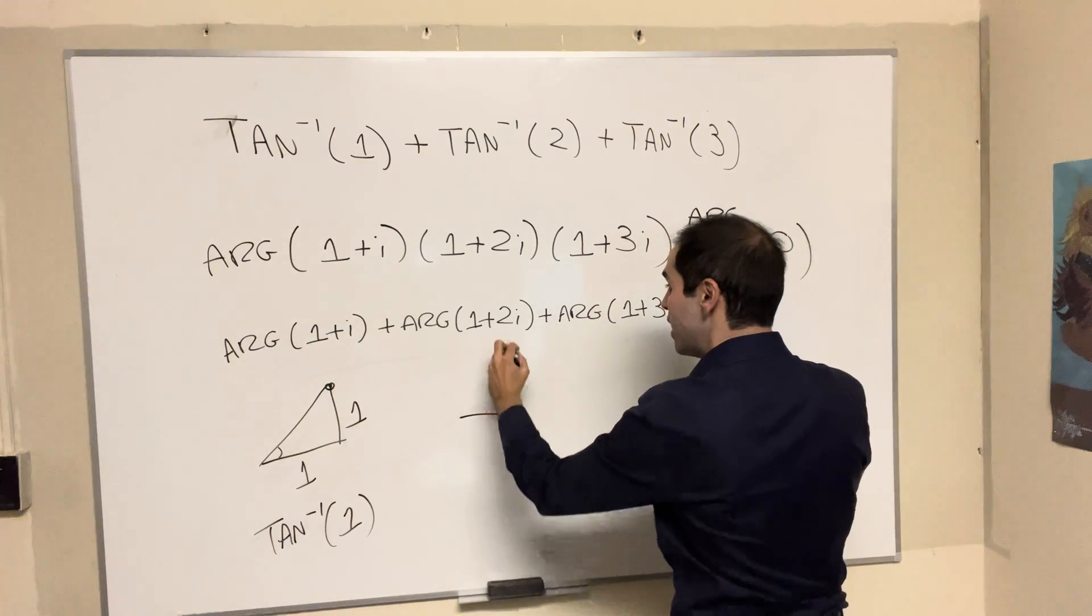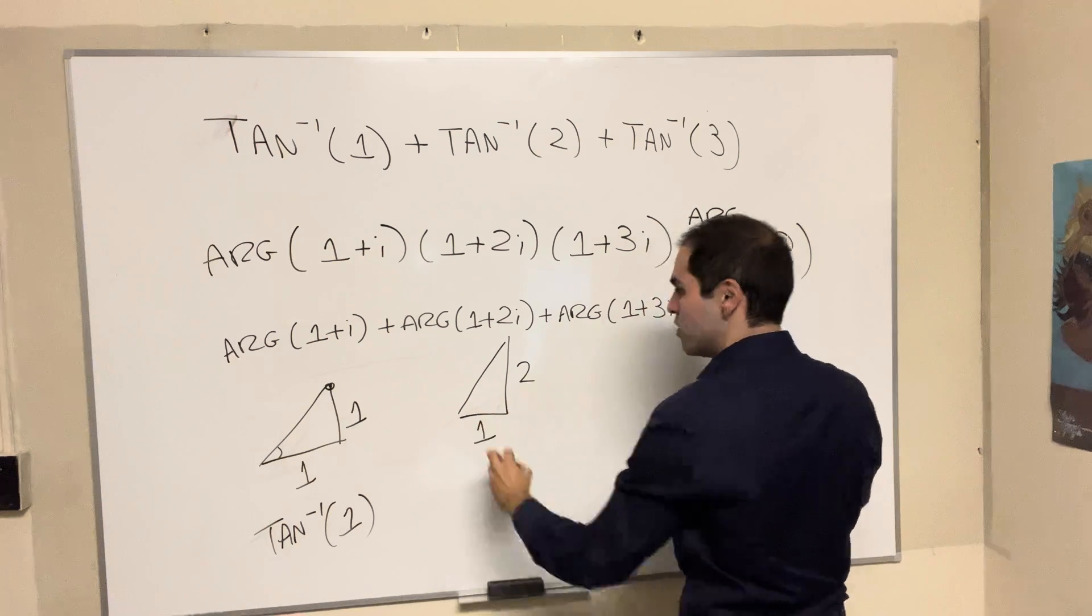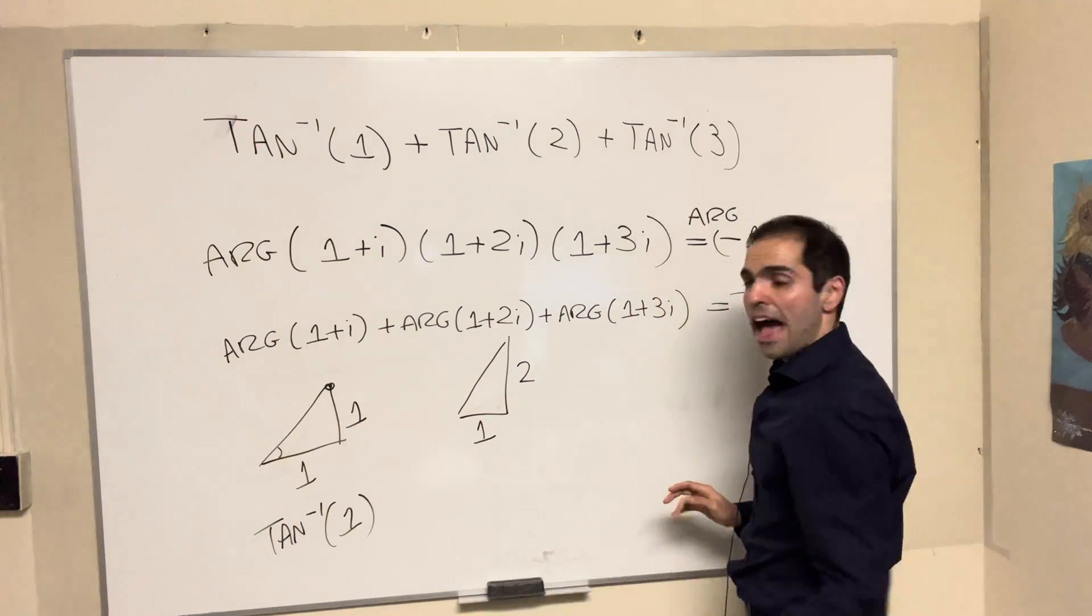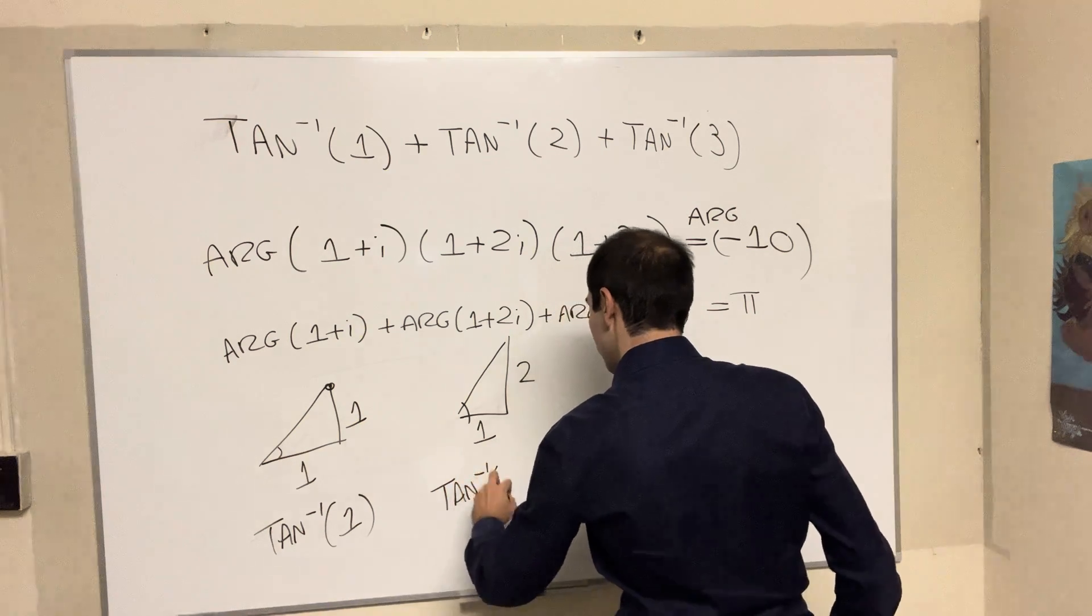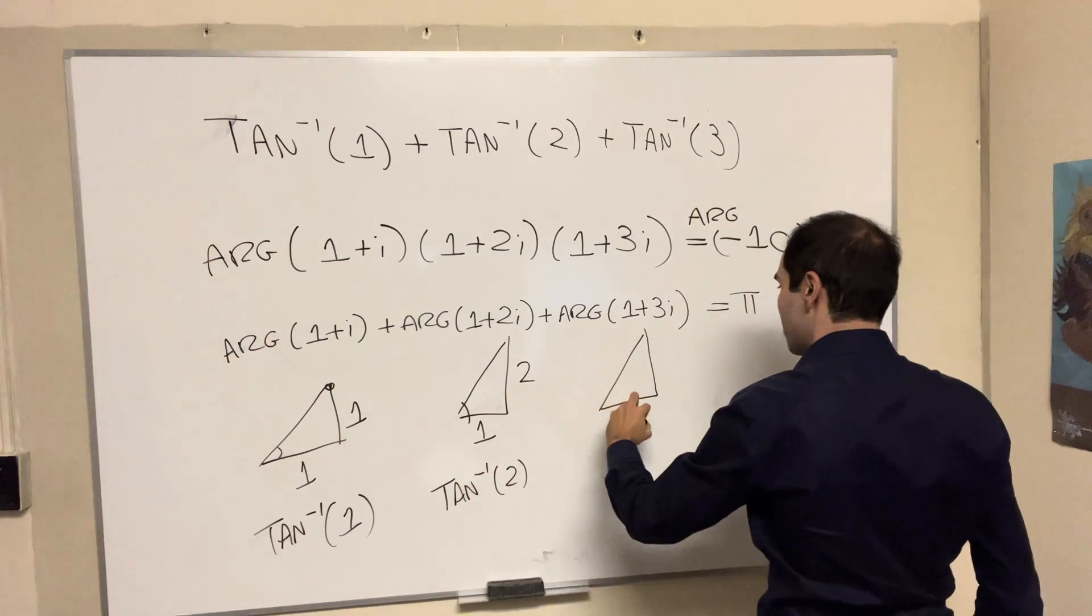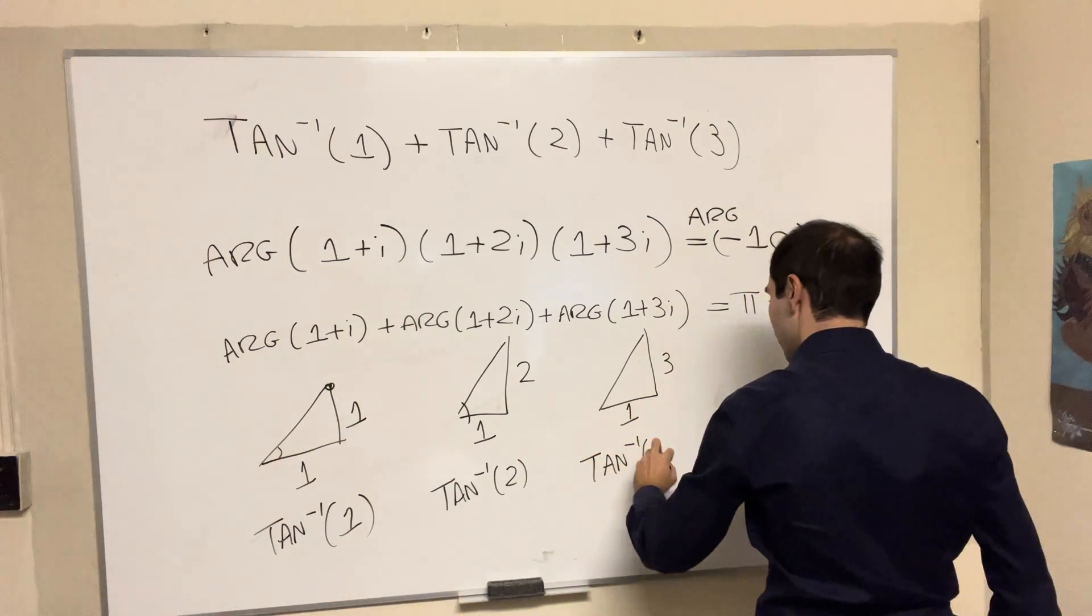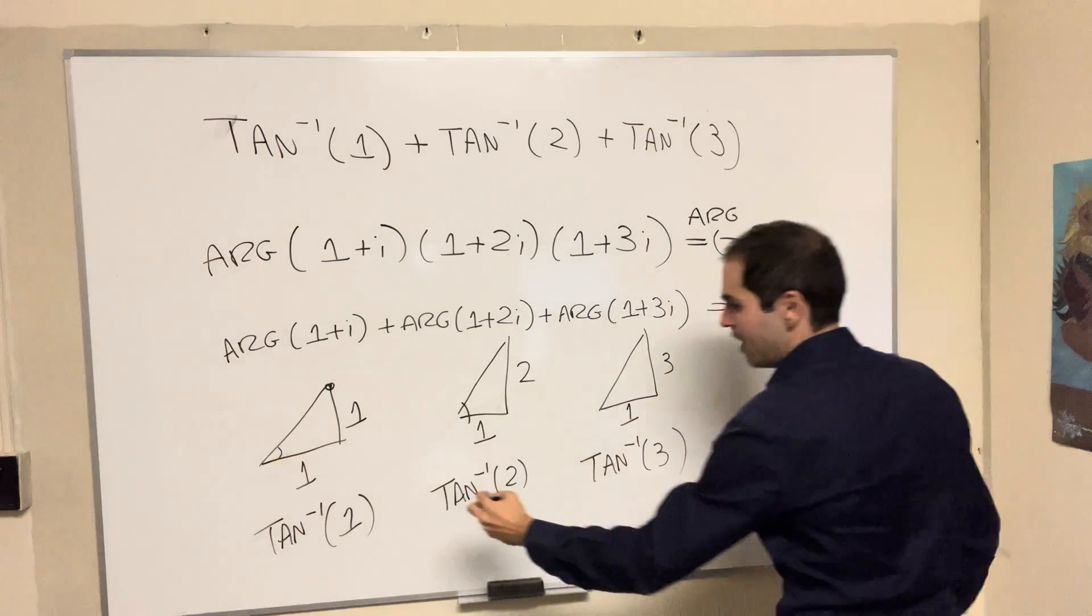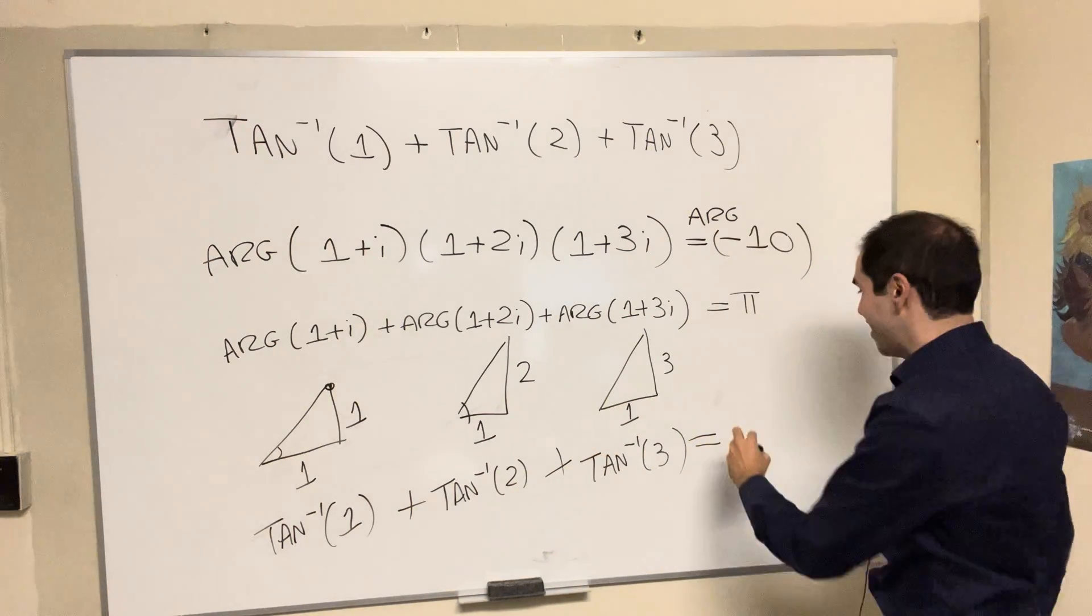Now, 1+2i, same thing, but rise is 2, run is 1. So this angle here now is arctangent of 2. And finally, we have 1 and 3. And then we get arctangent of 3. And well, as I mentioned, if you add all of them up, you do get π.